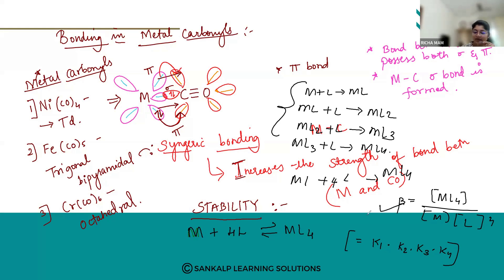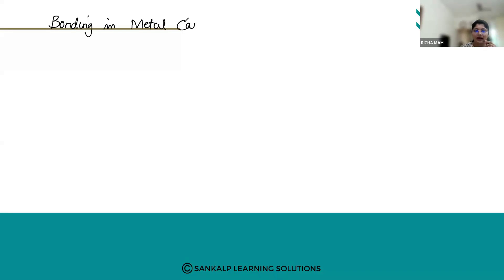So if the stability constant is larger, the concentration of the complex will be more in solution. Stepwise stability is important whenever we are forming any complexes. So we have seen bonding in metal carbonyls and the stability of coordination compounds.